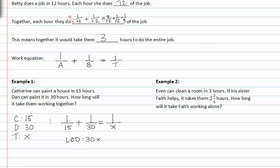So now we're going to have to multiply each term in our equation by thirty x. When we do this, we can divide out the common factors. We'll be left with two x in the first term, x in the second term, and thirty in the last term.